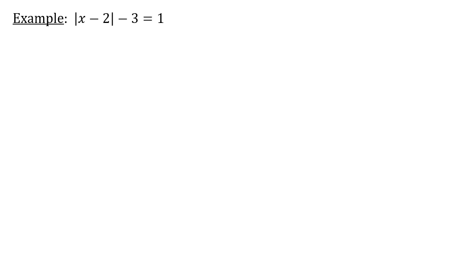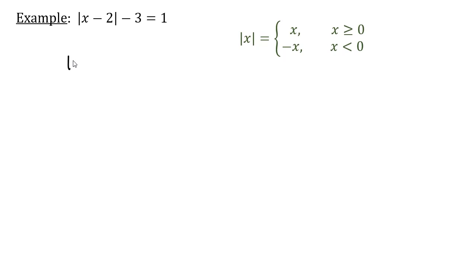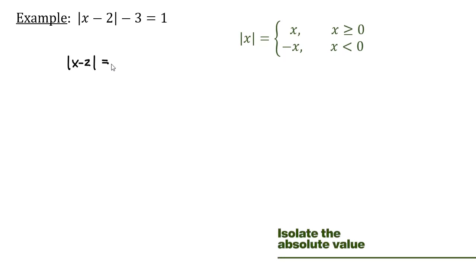So what if we have the example: absolute value of x minus 2, subtract 3, equals 1? We have to think of our definition, but before we do anything we have to isolate the absolute value on one side. So I would have the absolute value of x minus 2. If I add 3 to both sides, I'll have the absolute value of x minus 2 equals 4.